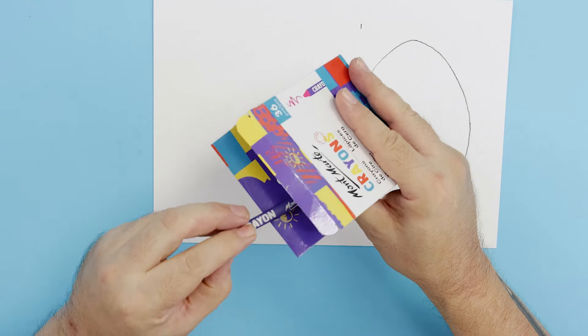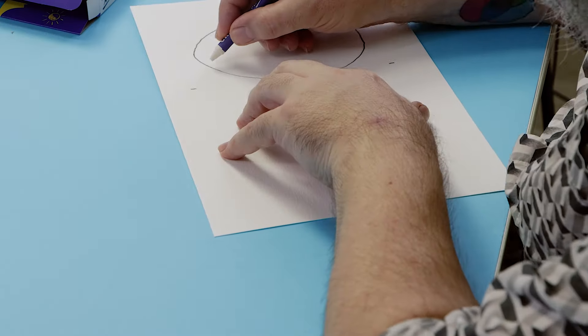Next we use a white wax crayon to draw a series of horizontal lines across the egg outline.